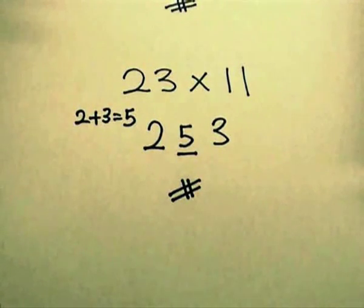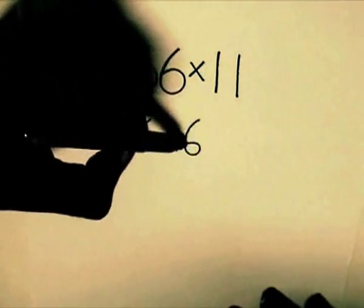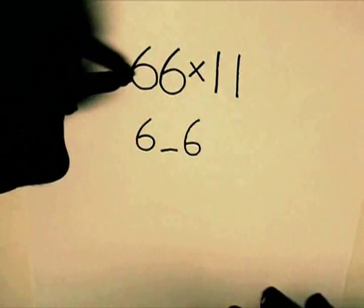Let's do one final example. What about 66 multiply with 11? Leave an empty space between both 6s. Do the same. Add both 6 and you will get 12.